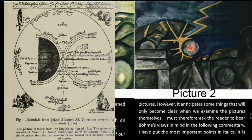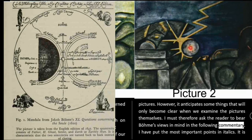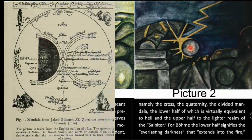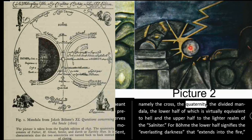536: I have purposely dwelt at some length on Böhm's disquisition on the lightning, because it throws a good deal of light on the psychology of our pictures. However, it anticipates some things that will only become clear when we examine the pictures themselves. I must therefore ask the reader to bear Böhm's views in mind in the following commentary. It is clear from the quotations what the lightning meant to Böhm and what sort of a role it plays in the present case. The last quotation in particular deserves special attention, as it anticipates various key motifs in the subsequent pictures done by my patient — namely the cross, the quaternity, the divided mandala, the lower half of which is virtually equivalent to hell, and the upper half to the lighter realm of the salmator.